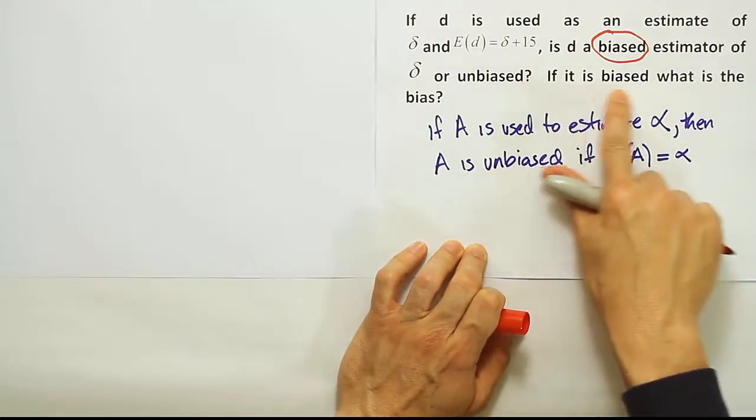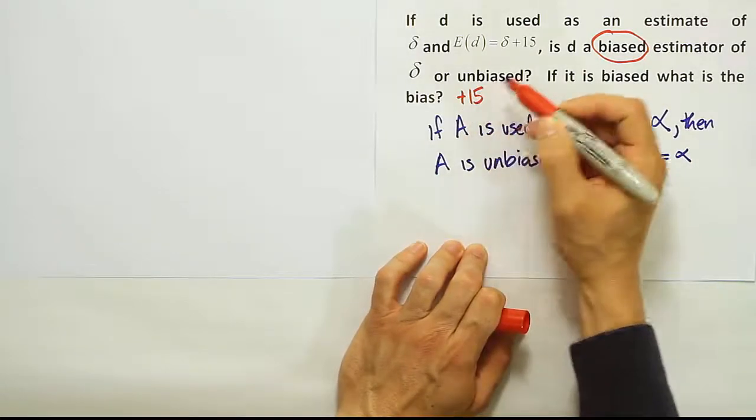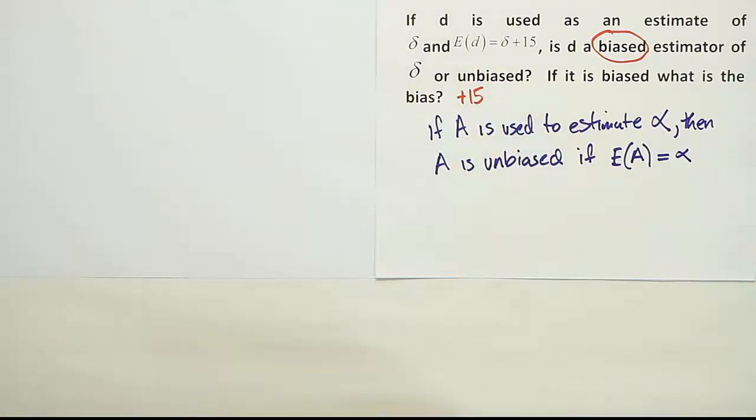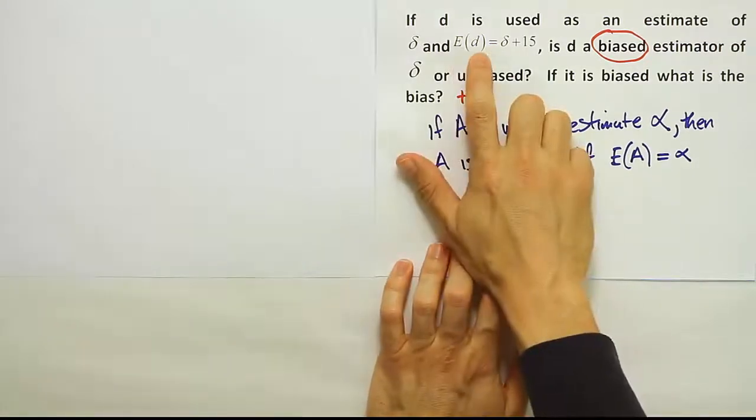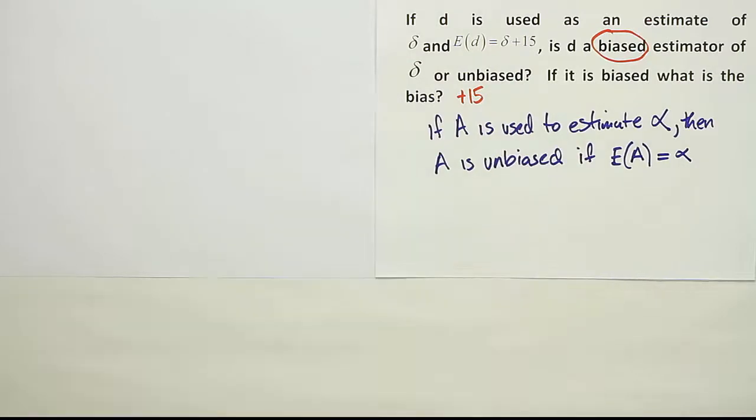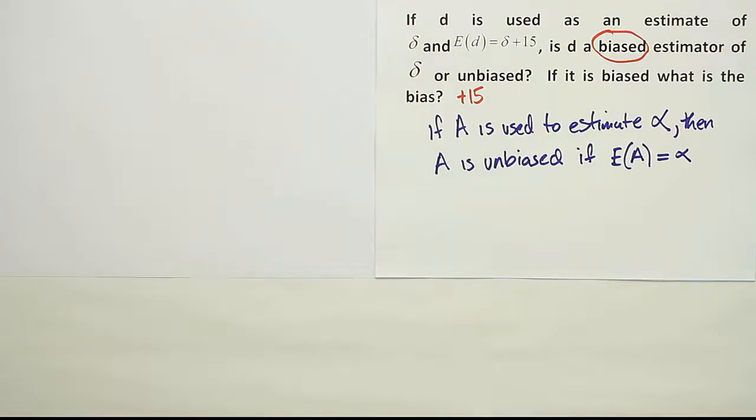And then it goes to this question. If it is biased, what is the bias? Well, it is biased and it's biased by plus 15. What that means is that D overestimates the value of delta, consistently overestimates the value of delta. In the long run, the expected value of D is actually 15 points higher than delta's actual value. So it's a biased estimator and it's overestimating typically.